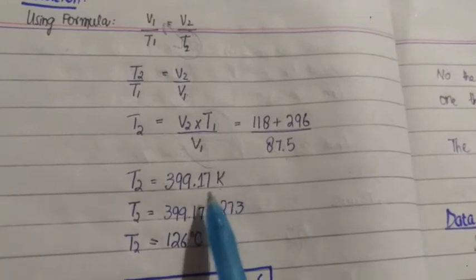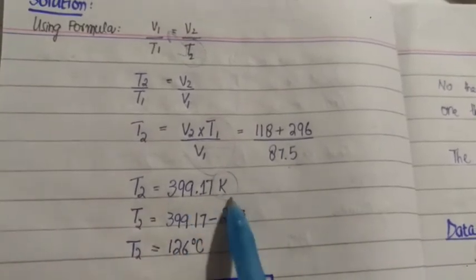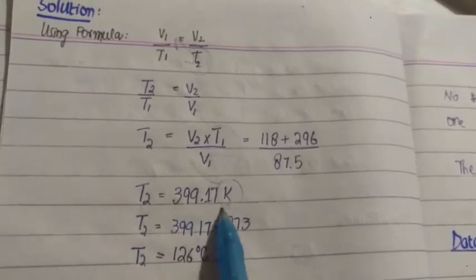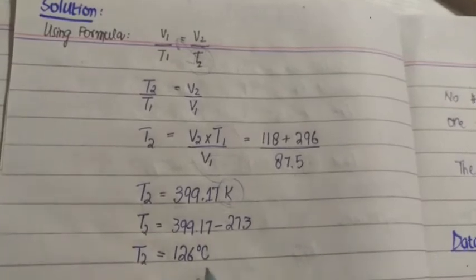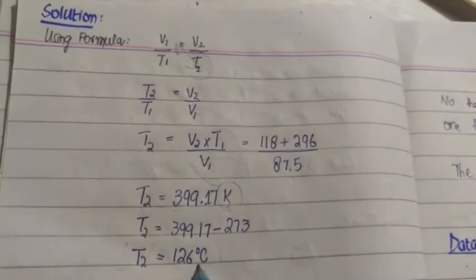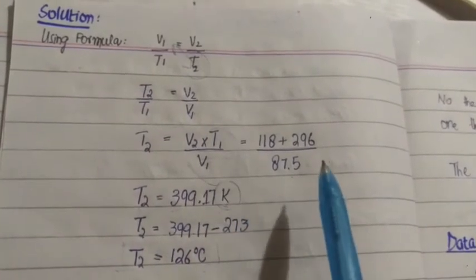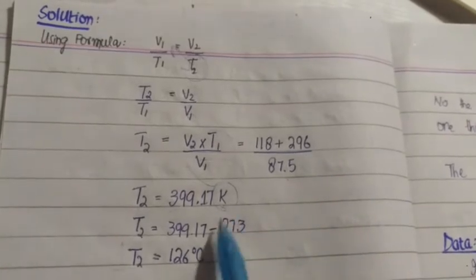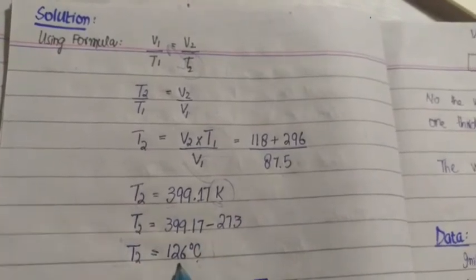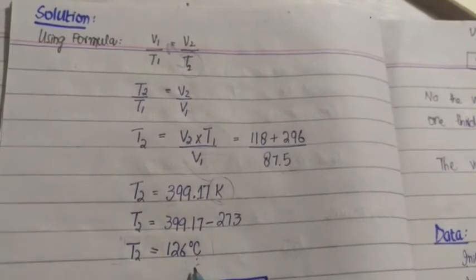We will put the values in this formula. All three values are given in the question. We put all three values and get the value of t2, but this comes in Kelvin. Why? Because t1 we took in Kelvin, so t2 value will also be in Kelvin. The unit will be Kelvin. Now we will convert this Kelvin to Celsius. We subtract 273 from this value, so the final temperature comes in Celsius, which is 126 degree centigrade. So the final answer is that if we provide 126 degree centigrade temperature to the gas, its volume will increase to 118 cm³.